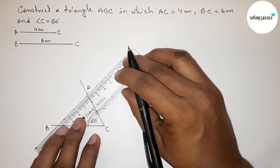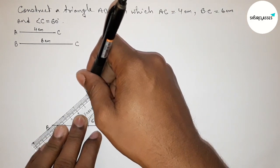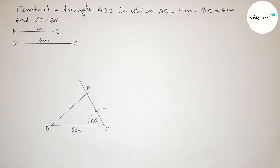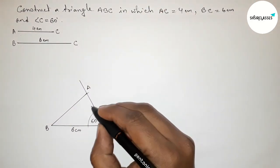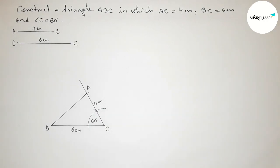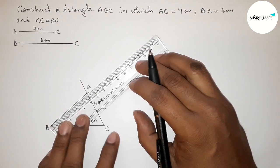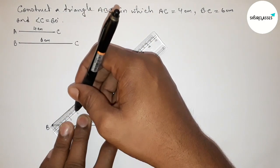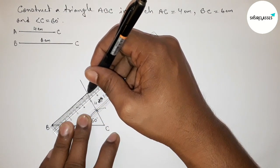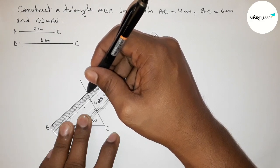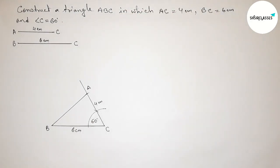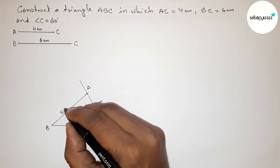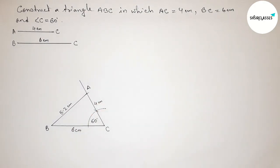Joining A to B to get triangle ABC. AC equals 4 centimeter. Now measuring the length of AB — this is approximately 5.2 centimeter.